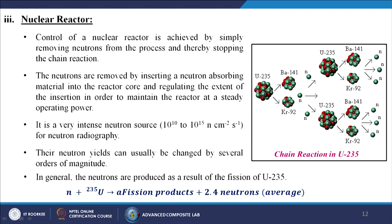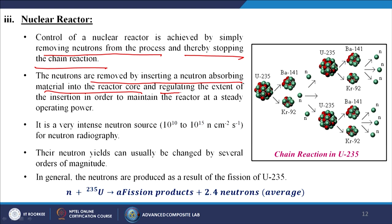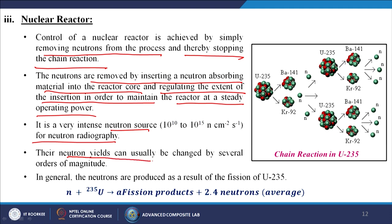Control of a nuclear reactor is achieved by removing neutrons from the process, thereby stopping the chain reaction. Neutrons are removed by inserting a neutron-absorbing material into the reactor core and regulating the extent of insertion to maintain steady operating power. It is a very intense neutron source — 10¹⁰ to 10¹⁵ neutrons per cm² per second — and neutron yields can be changed by several orders of magnitude. The neutrons are produced as a result of fission of uranium-235, generating an average of 2.4 neutrons per fission.